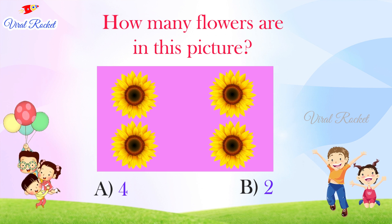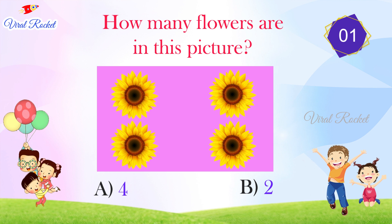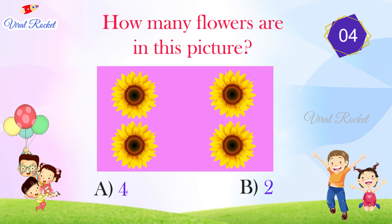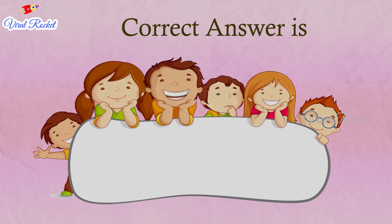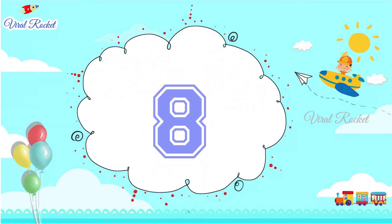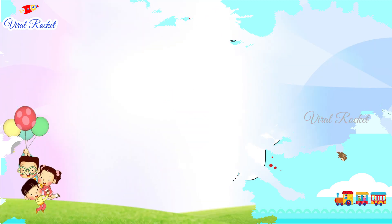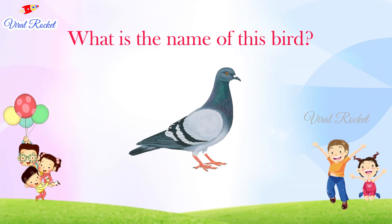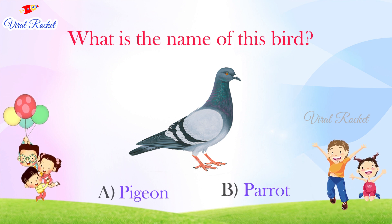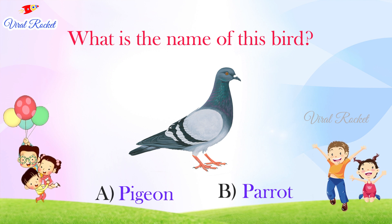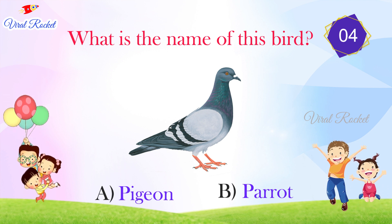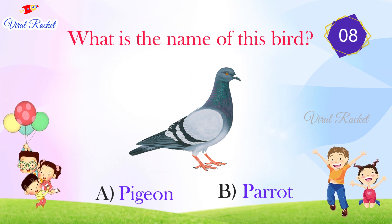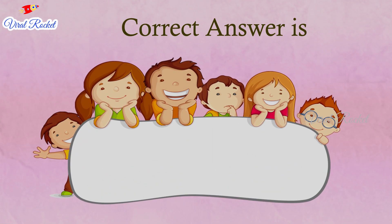What do you see in this picture? The options are: A. 4, B. 2. The correct answer is A. 4.